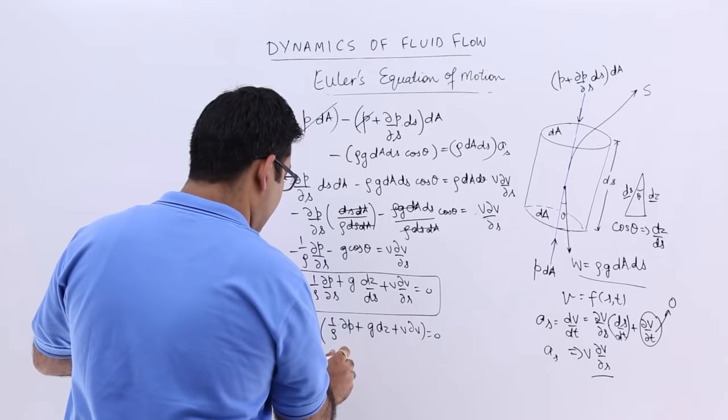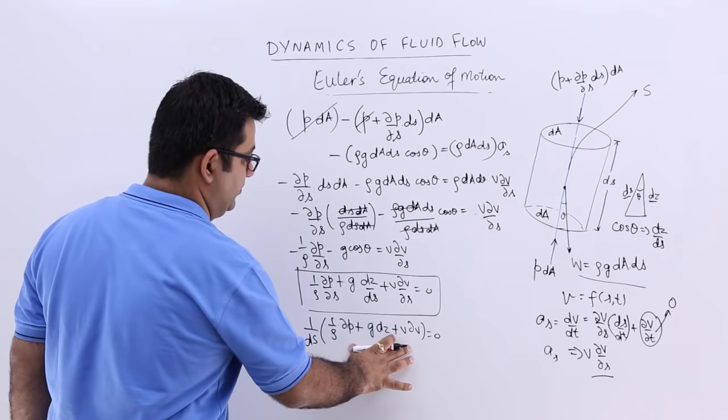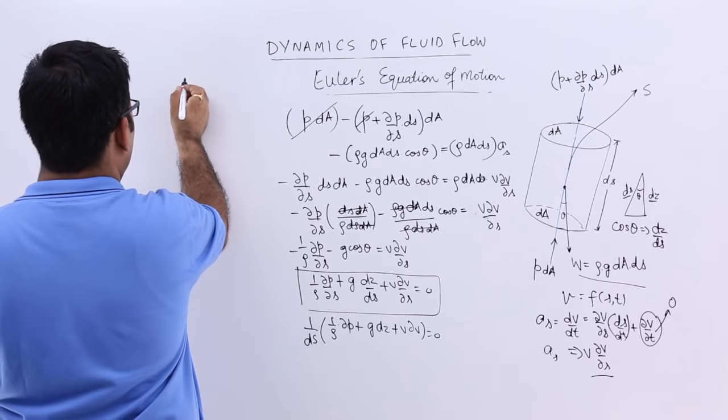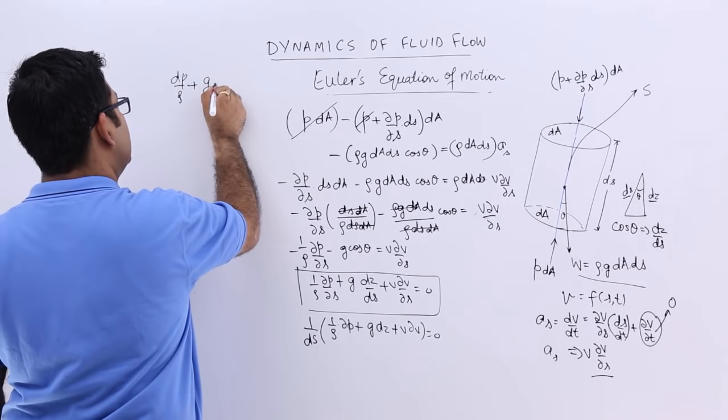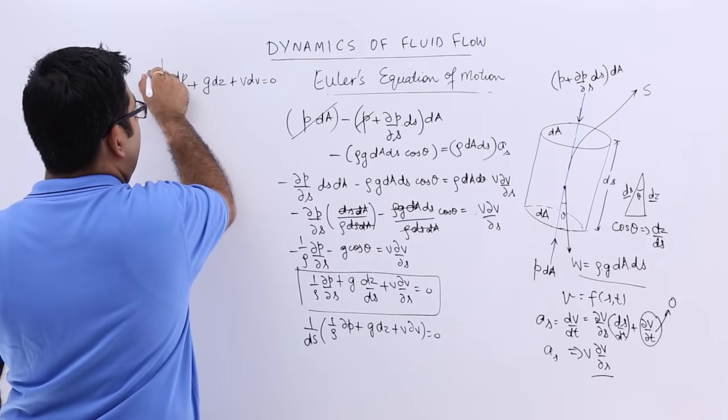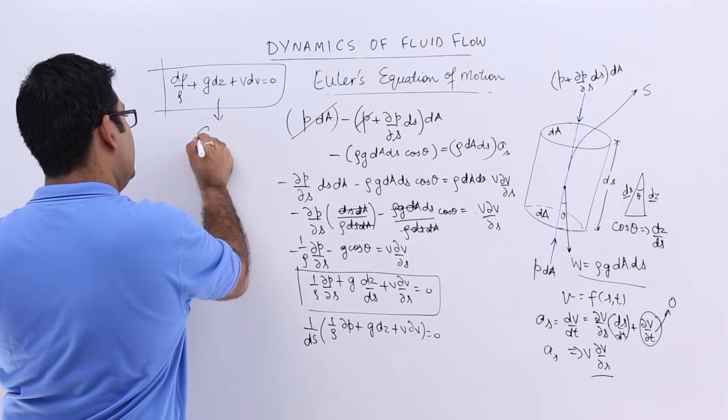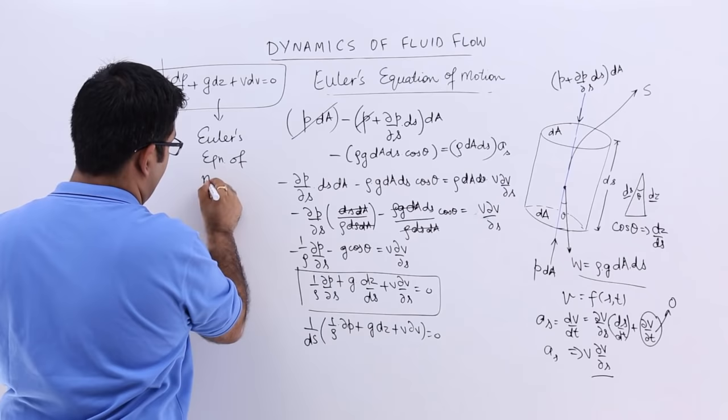So the only thing that can be 0 is this part. So I will write down dp by rho plus g into dz plus V into dV equal to 0. So this equation that you see on your board over here, this is called Euler's equation of motion. This is Euler's equation of motion.